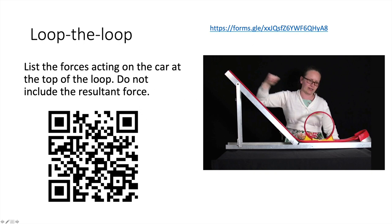Next, we're considering a loop-the-loop and asked to list the forces acting on the car at the top of the loop, not including resultant forces. At the top, we have the weight force pulling it down and the normal reaction force from the track. We should not include the centripetal force because that is a resultant of these two forces — it's not a force actually acting on the car.